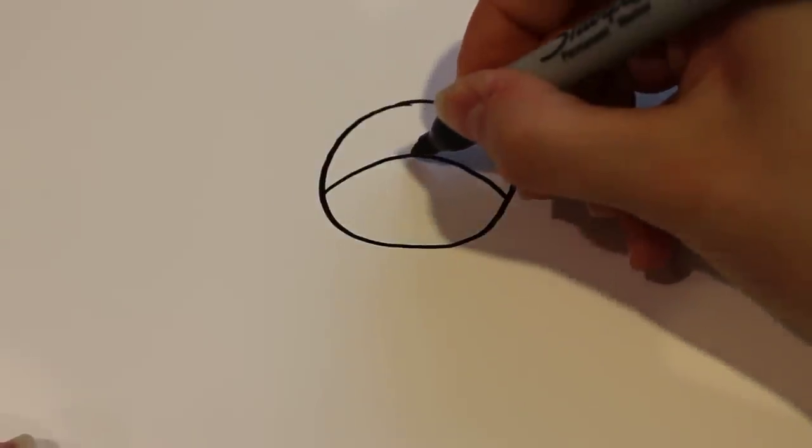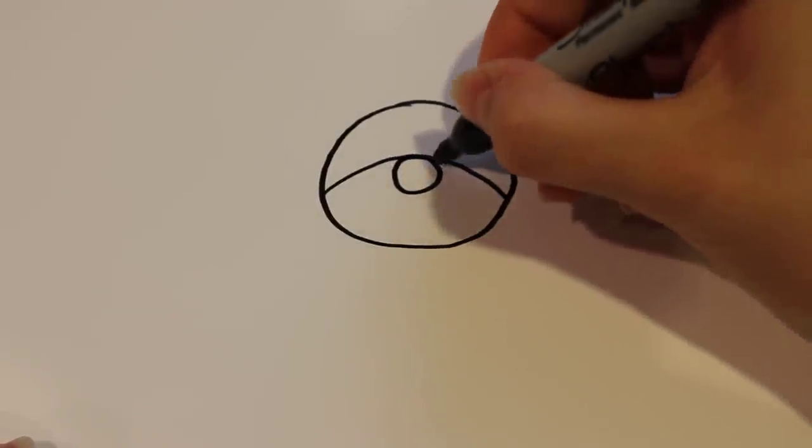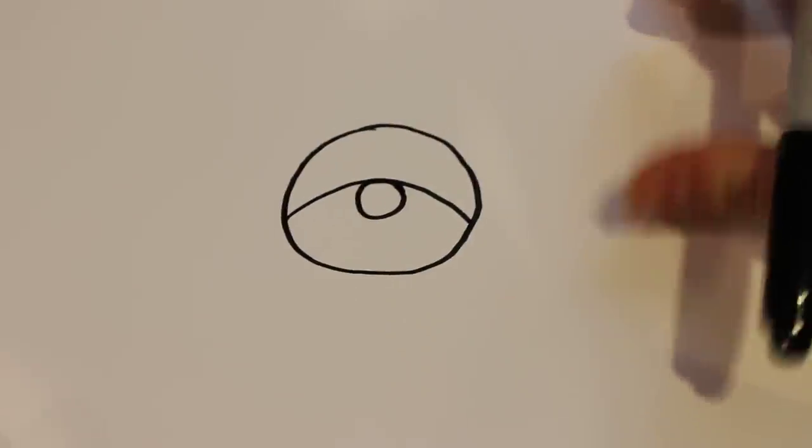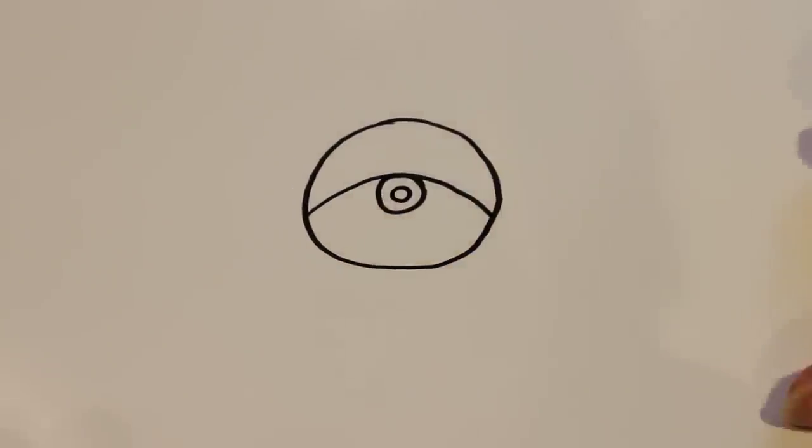And after that we're going to draw the mouth which is just going to be a circle. It's okay if it touches the line. And then in the middle of the circle you're going to draw another small circle like that.